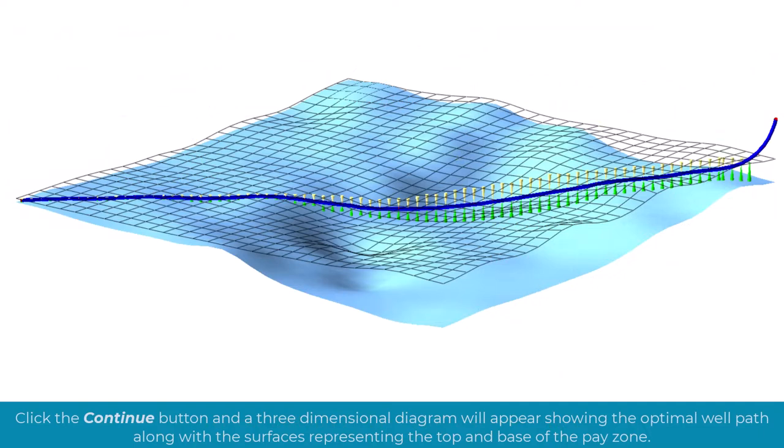Click the Continue button, and a three-dimensional diagram will appear, showing the optimal well path along with the surfaces representing the top and base of the pay zone.